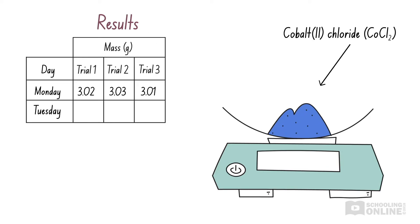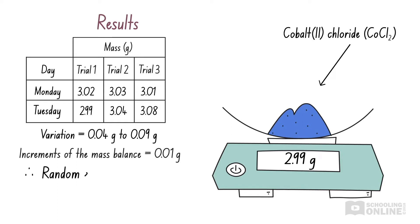On Tuesday, you return and weigh the sample three more times using the same method and equipment. This gives you the following measurements. As we can see, the differences between these measurements are large, from 0.04 to 0.09 grams. These differences are much larger than the increments of the mass balance, so these results have been affected by large random errors. This means that the values recorded on Tuesday are not reliable.